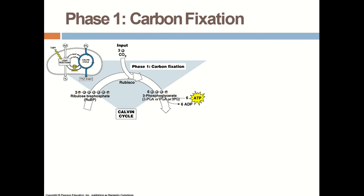We start with the first phase of the Calvin cycle, which is carbon fixation. One molecule of CO2 is bound with the 5-carbon ribulose bisphosphate and converted into a 6-carbon intermediate compound, which is further split into 2 molecules of the 3-carbon compound 3-phosphoglycerate.